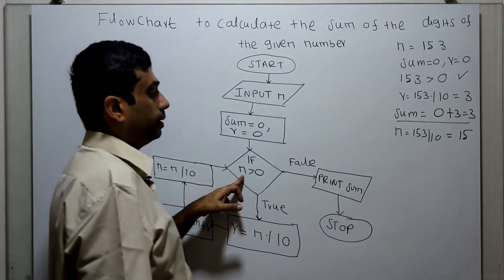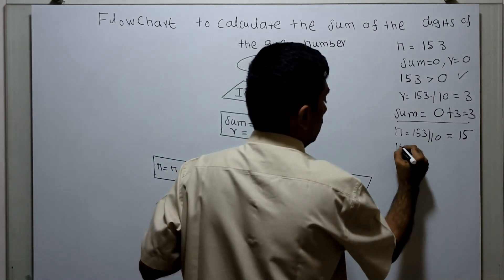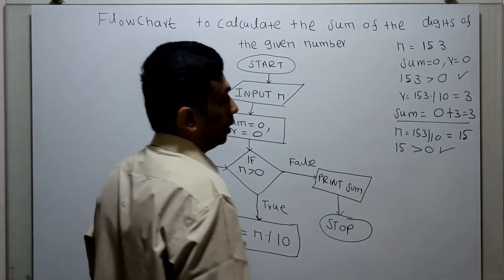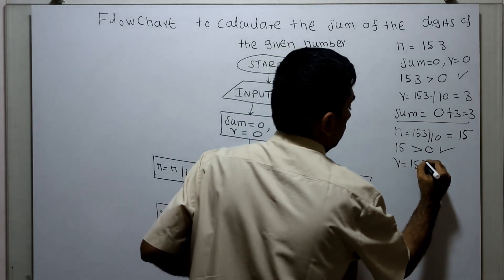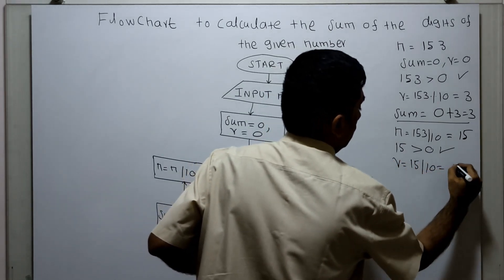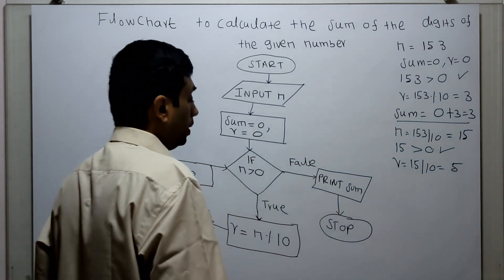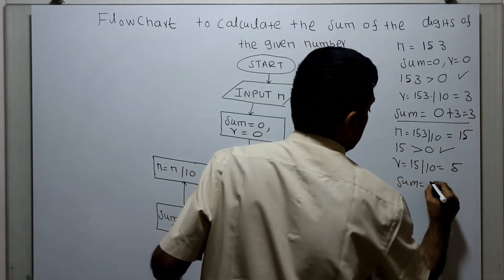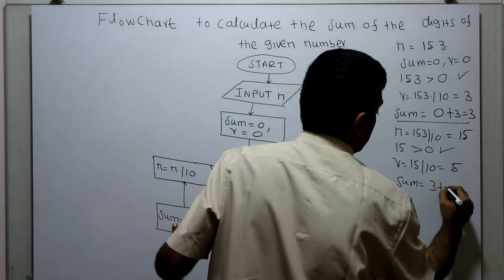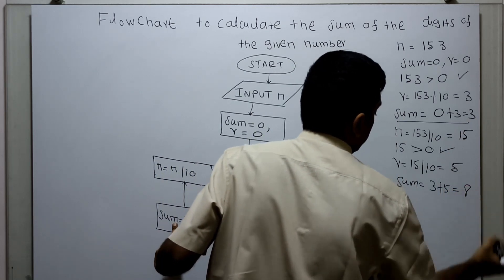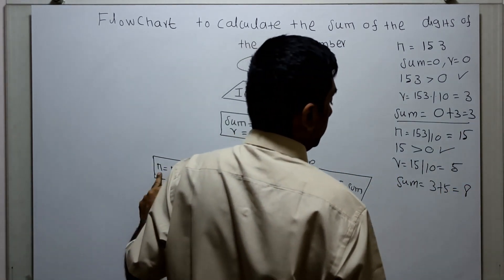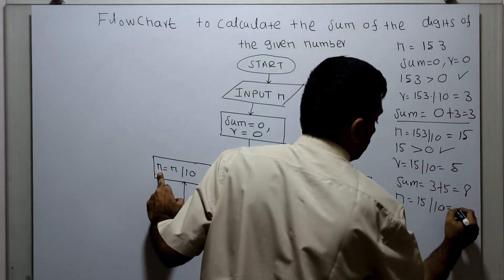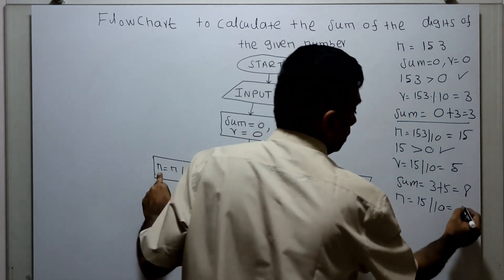Now check 15 greater than 0 — true. Remainder: r equal to 15 mod 10, r equal to 5. Sum equal to sum plus r: existing sum is 3, plus remainder 5 equals 8. Then n equal to 15 divided by 10 — integer division gives 1.5, fraction part removed, n equal to 1.